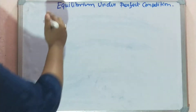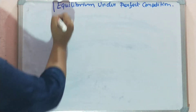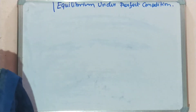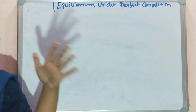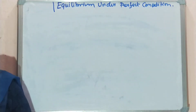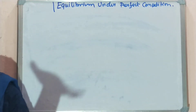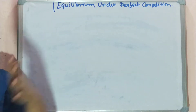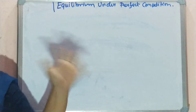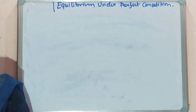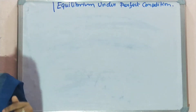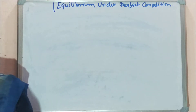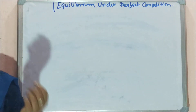Let us start with the new topic: the equilibrium under perfect competition. We have discussed about various market forms — perfect competition, monopoly, monopolistic, and everything. Now we need to see what is the equilibrium position or what is the equilibrium condition under perfect competition market.